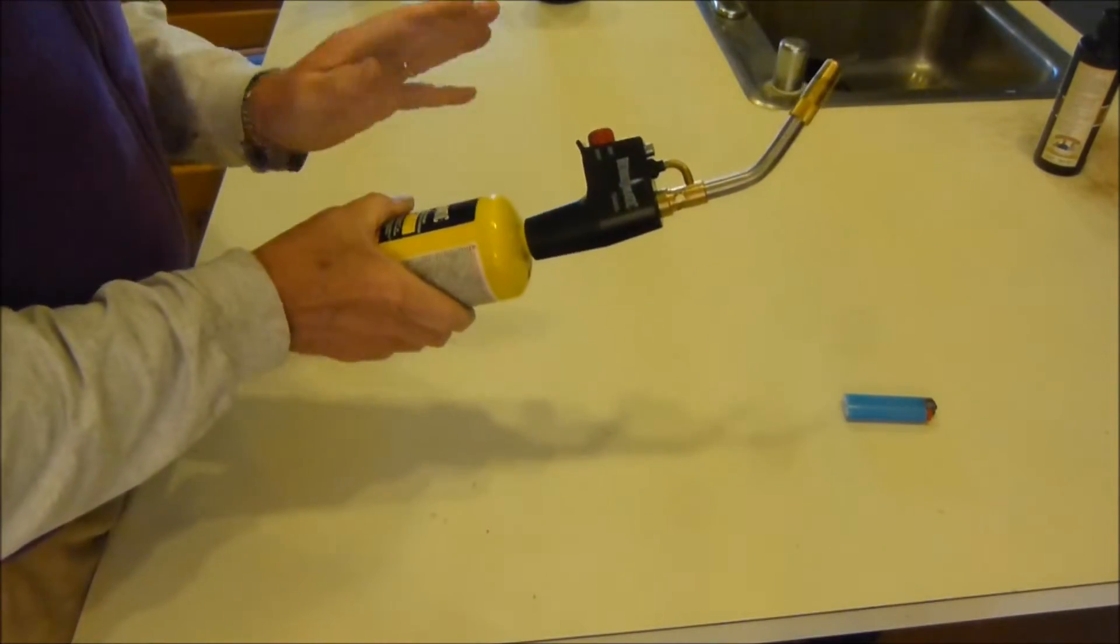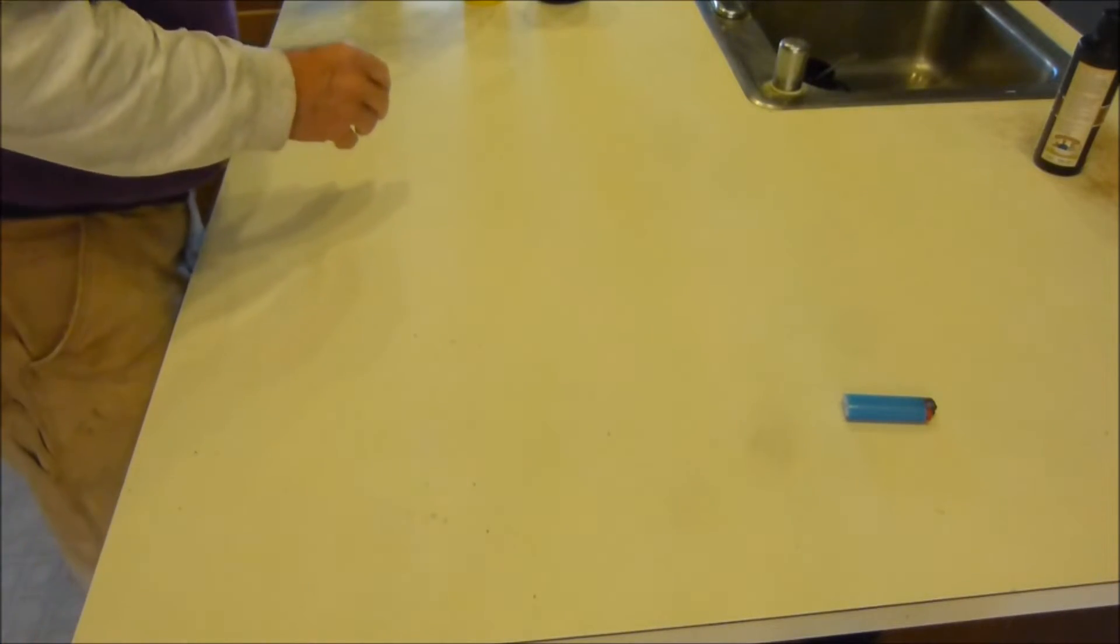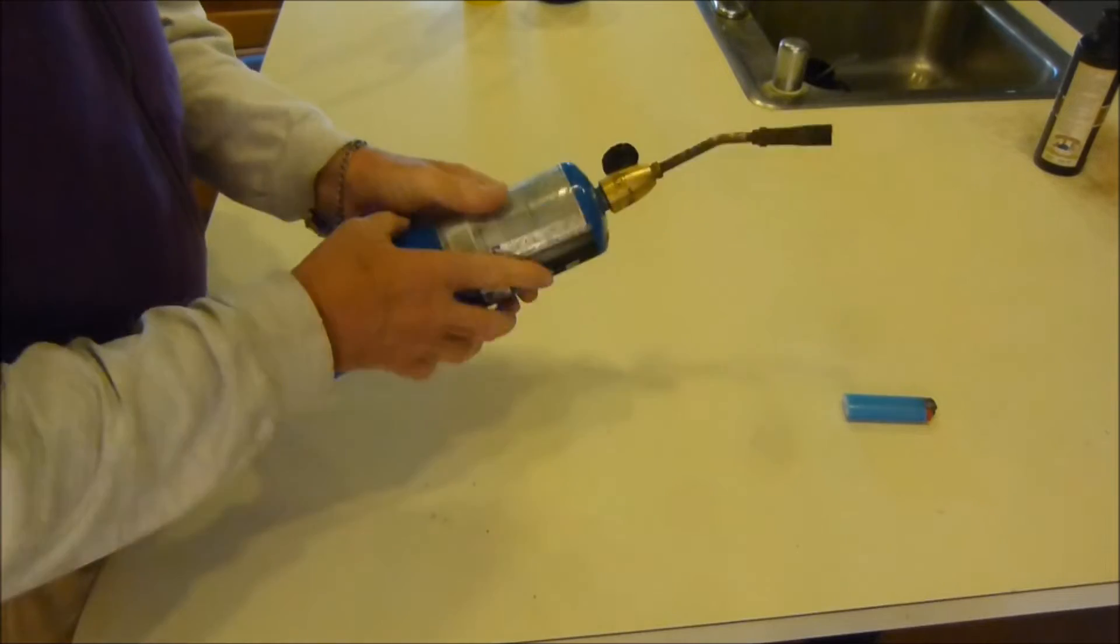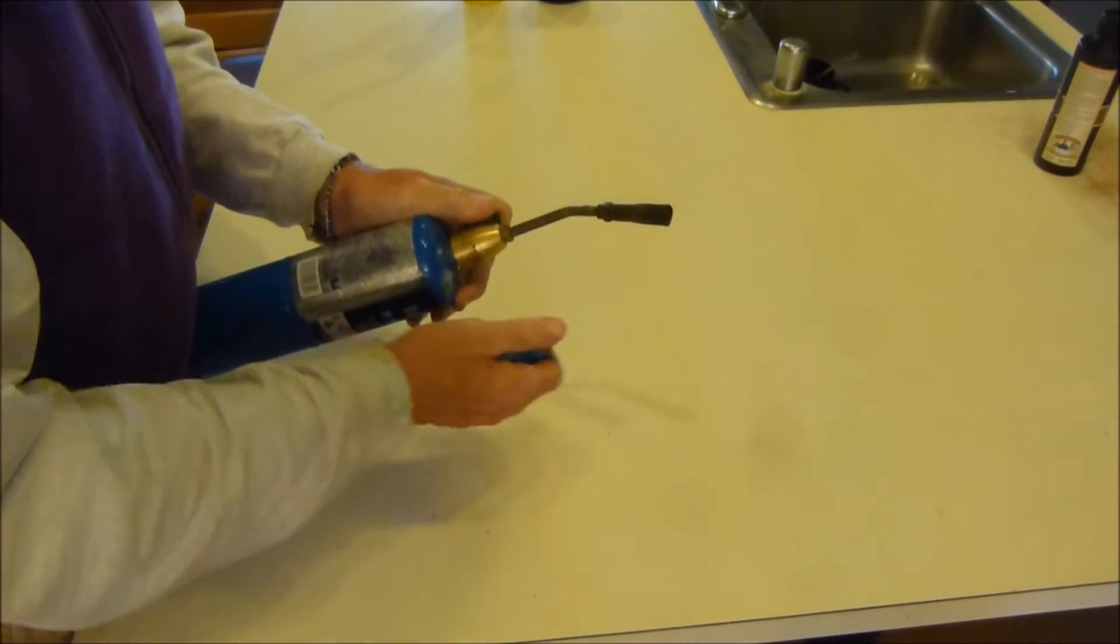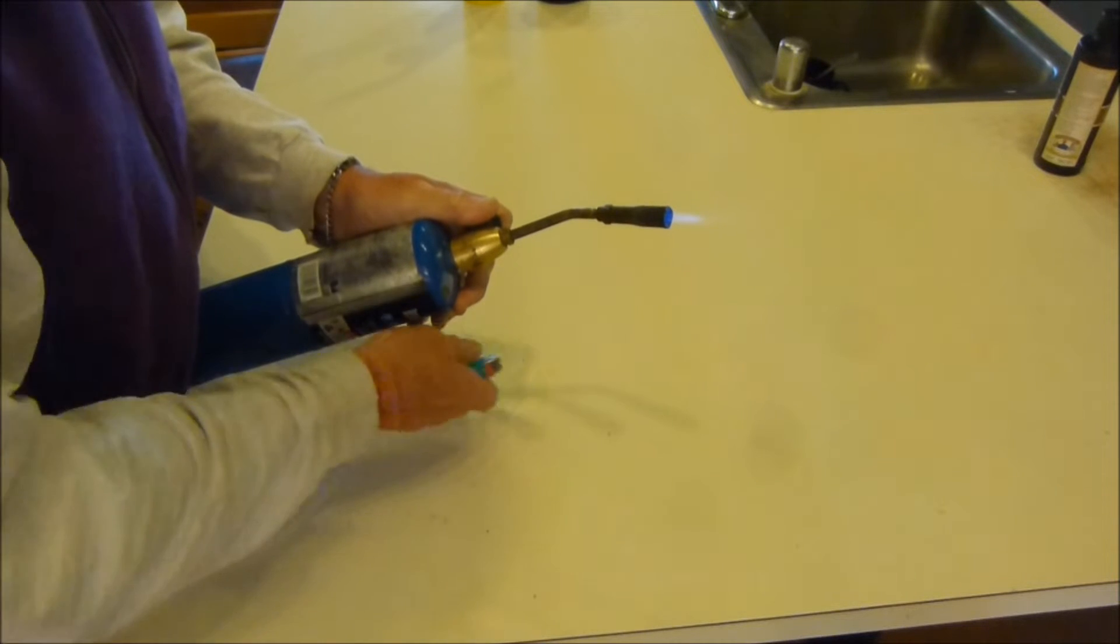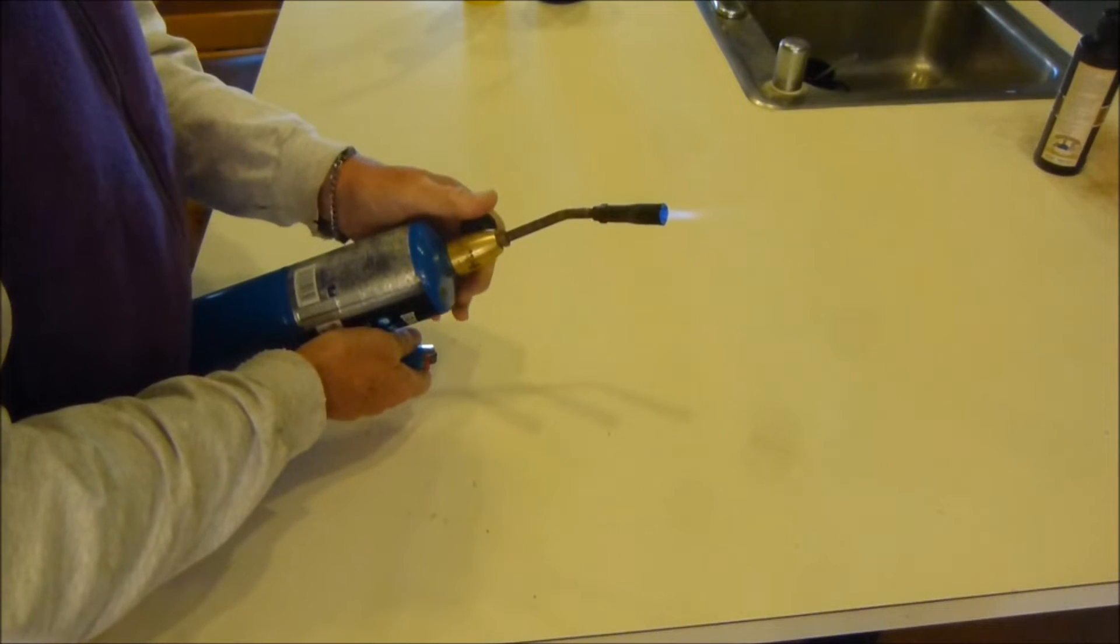I'm going to show you the difference between a torch using MAP gas and a torch using propane gas. With the propane, you turn on the gas a little and you light it. Sometimes this is very difficult to do, usually not.